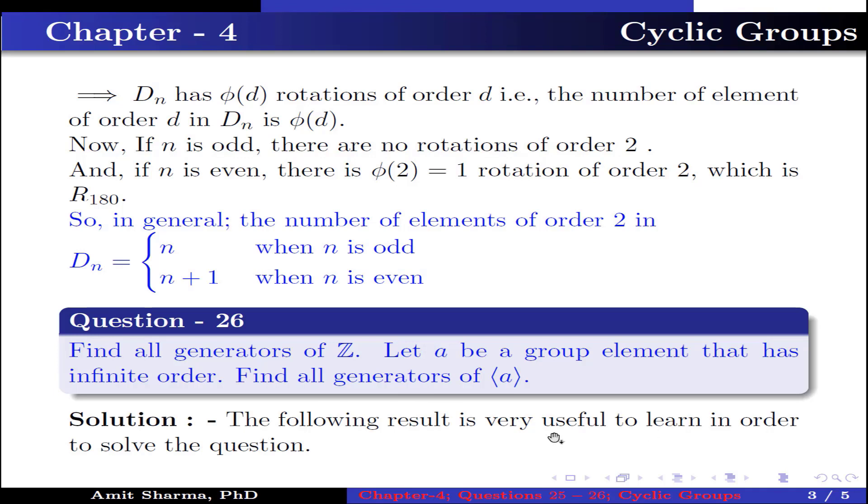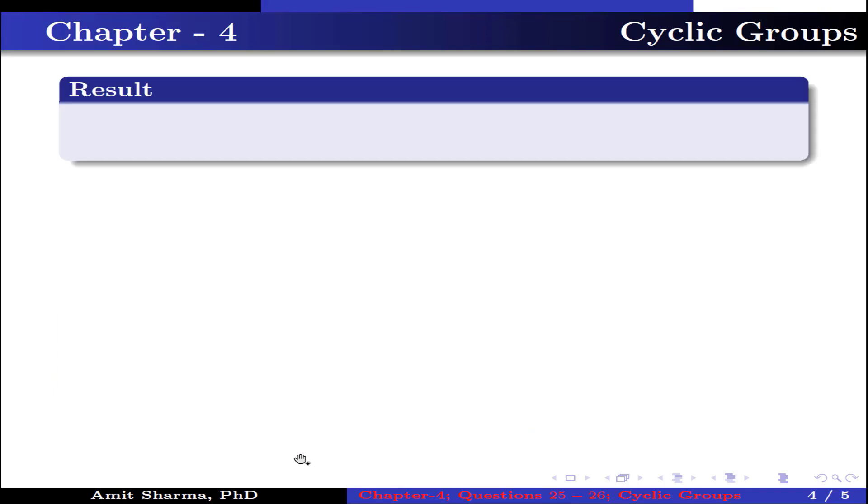The following result is very useful to learn in order to solve the question. Result: Let G be a group and let a belong to G. If a has infinite order, then a^i equals a^j if and only if i equals j.